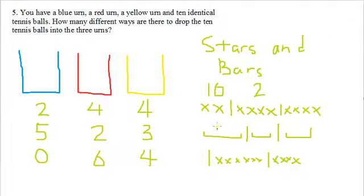So what is that? Well, we have a sequence of twelve items, and two of those are bars. So we can just do 12 choose 2, and that gives us 66.